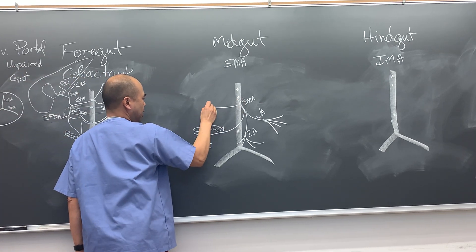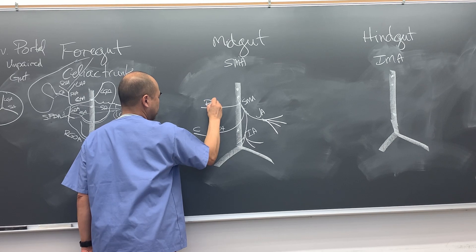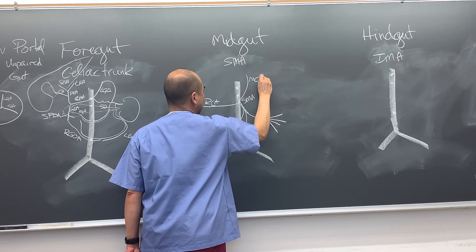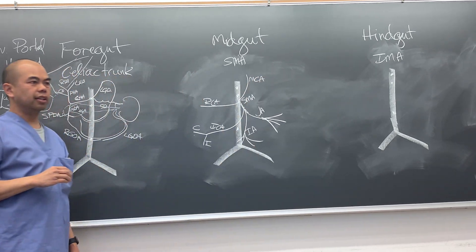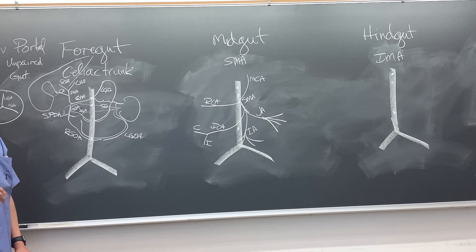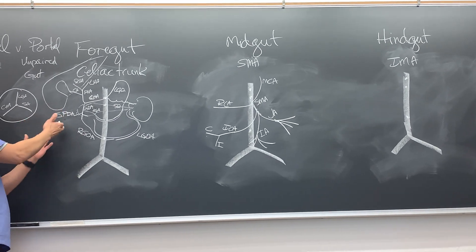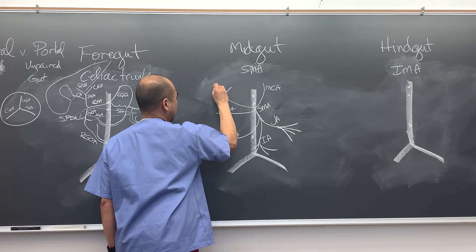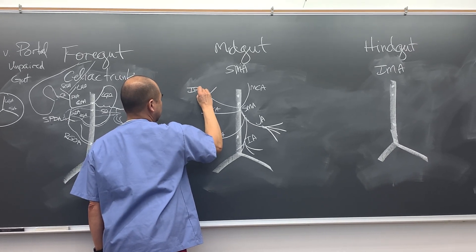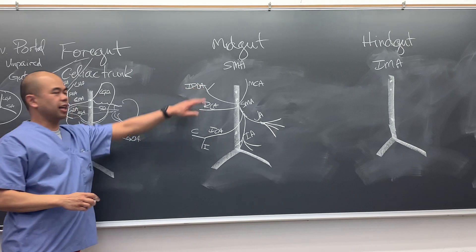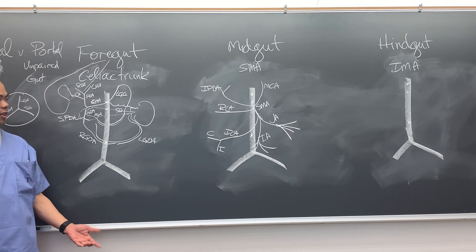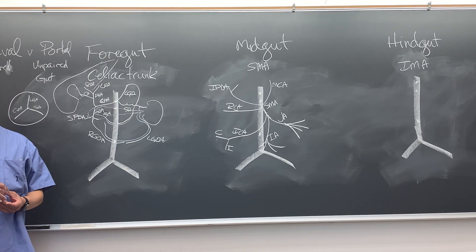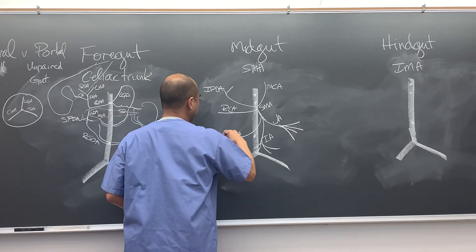Off the SMA we also have the right colic artery, and going up, the middle colic artery. And since we had a superior pancreaticoduodenal, we also have an inferior pancreaticoduodenal coming off the SMA. The colic arteries are connected and anastomosing together via the marginal artery of Drummond.